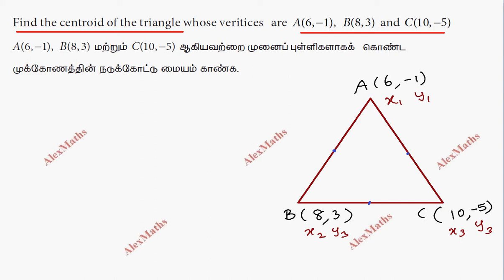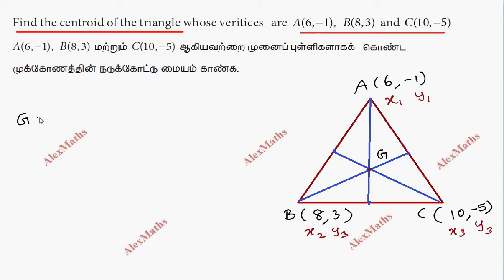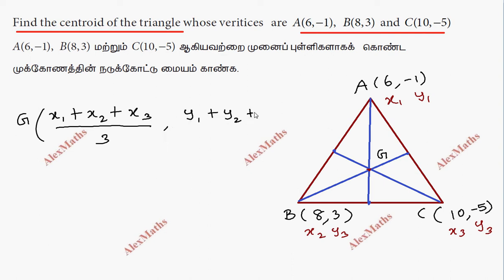So the lines we join go from vertex A to the midpoint of the opposite side, from vertex B to its midpoint, and from vertex C to its midpoint. When joined, these 3 lines meet at one point — that is the centroid. We use the formula: G = ((x1 + x2 + x3) / 3, (y1 + y2 + y3) / 3).